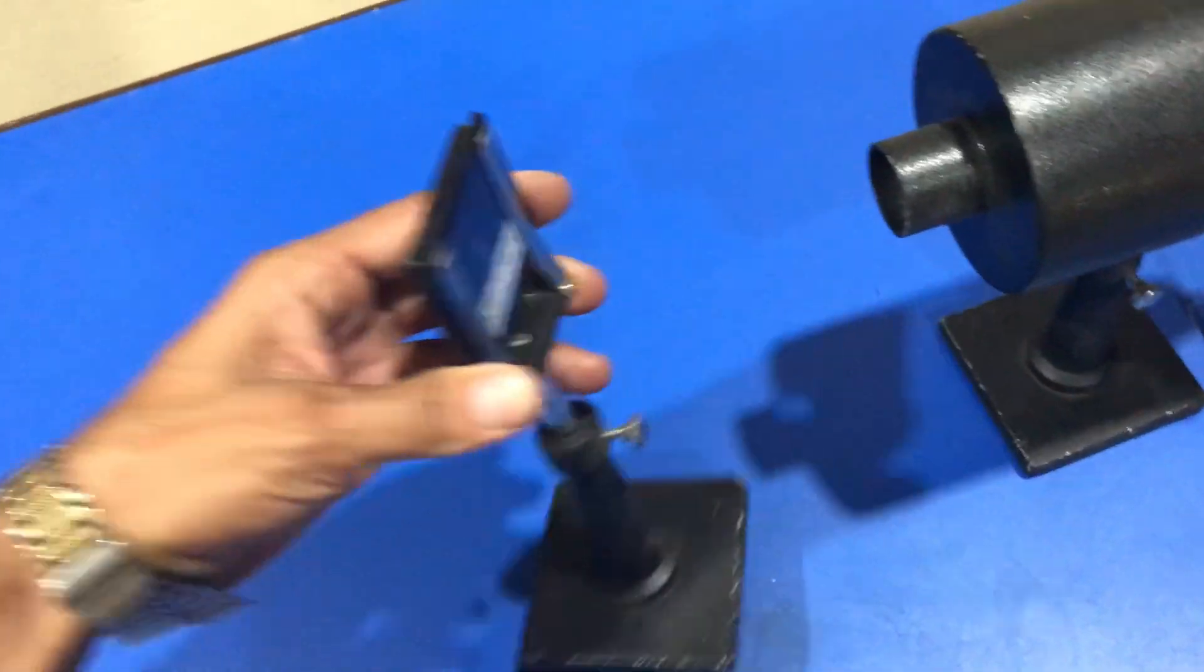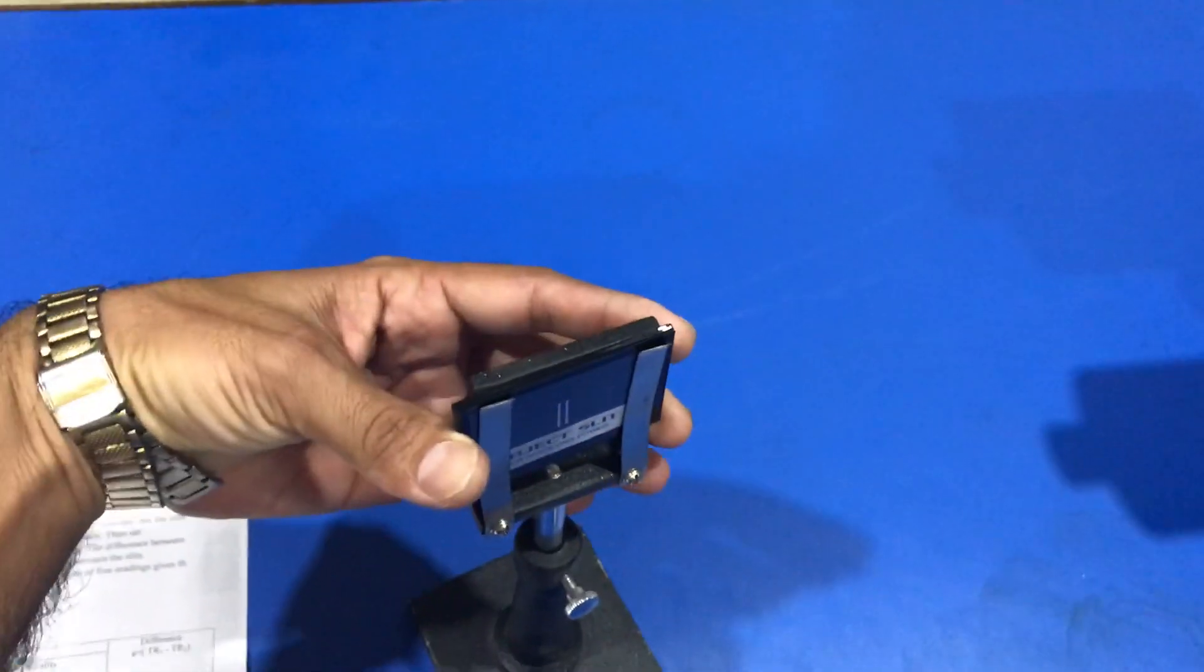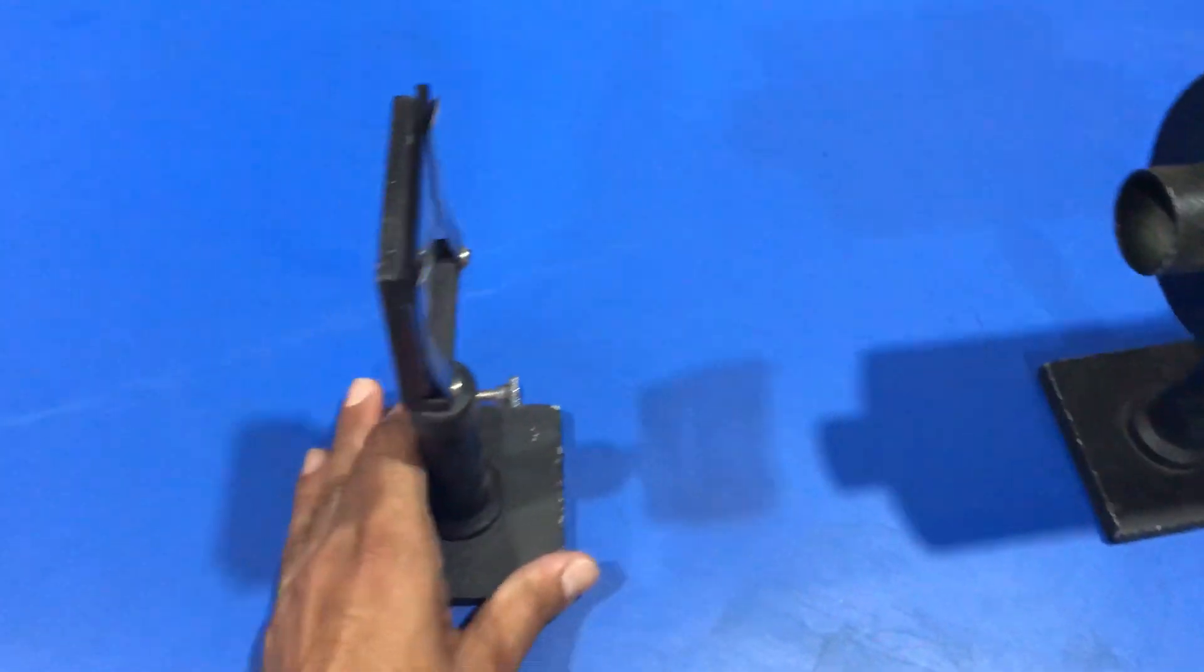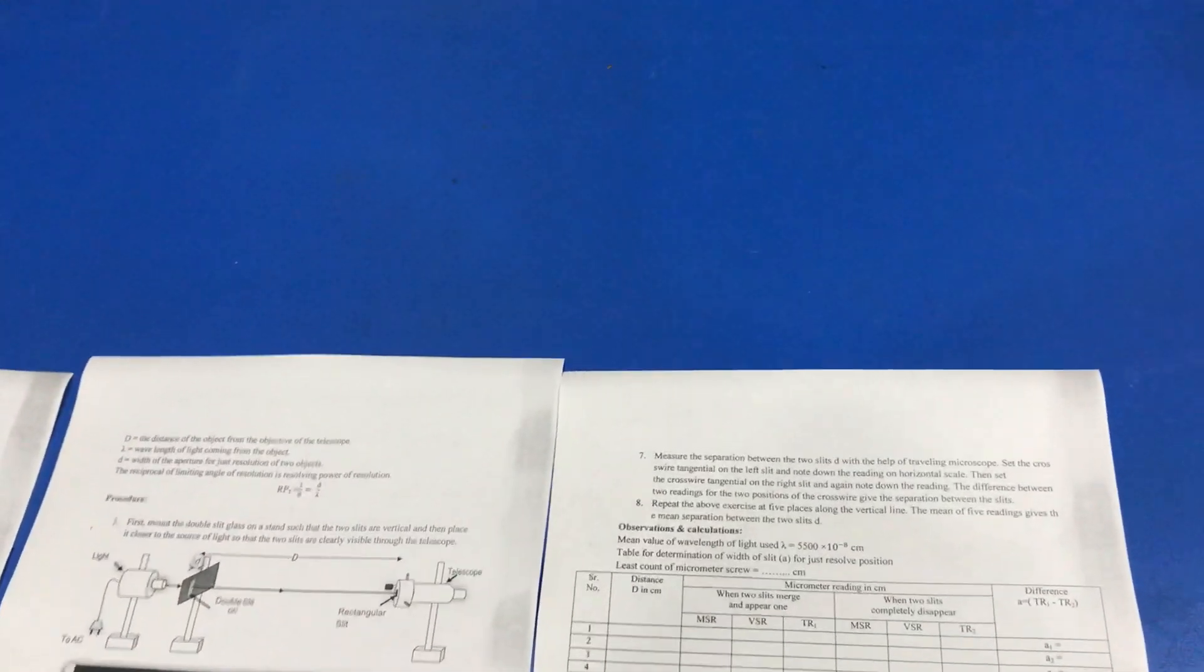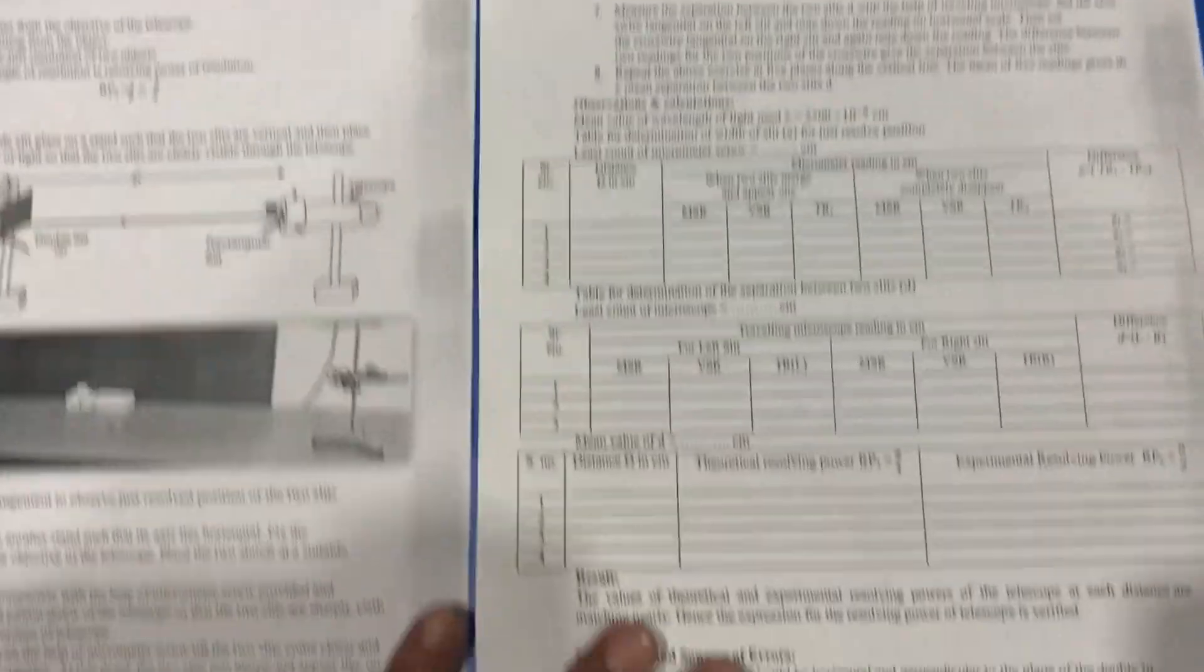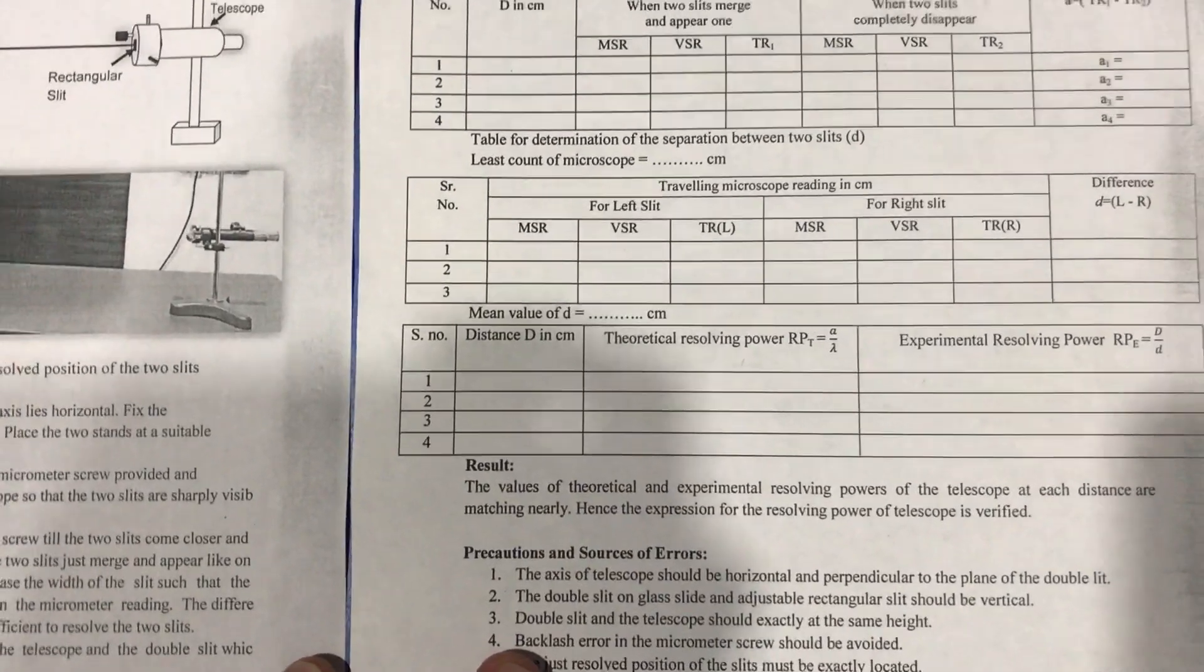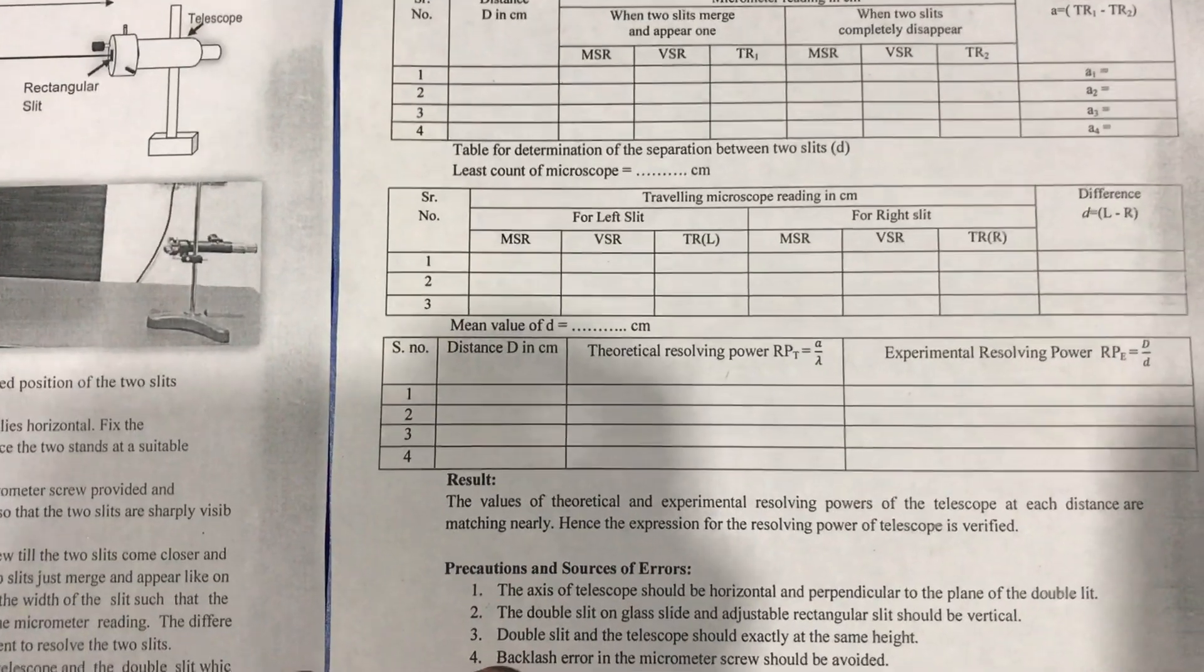After that, we calculate the value of distance between these two slits with the help of a traveling microscope. On the basis of all these observations, we can calculate the theoretical resolving power.